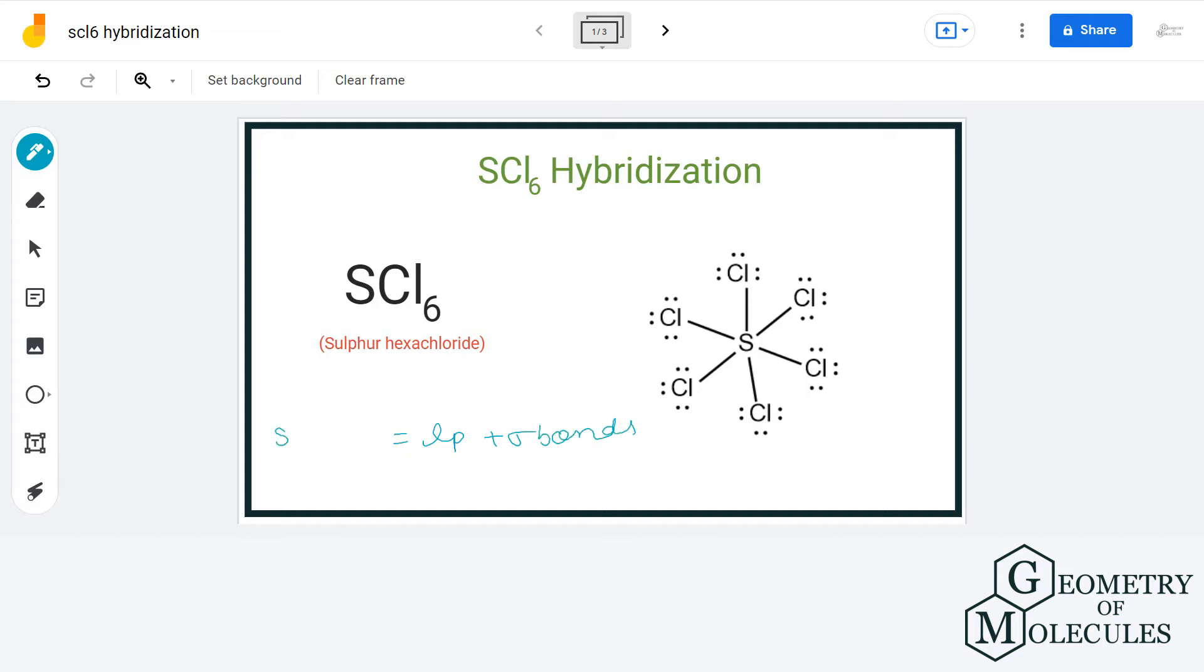This is known as steric number. In other words, steric number equals the summation of sigma bonds and lone pairs attached to the central atom.